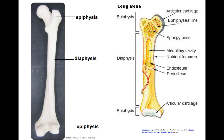Bones are the major organs of the skeletal system. Seen here is a picture of the longest bone in your body, the femur. The ends of a long bone are termed epiphyses, and the shaft of the long bone is termed the diaphysis. Found on the epiphyses where the bone articulates with another bone is articular cartilage, which functions to reduce friction in the joint as the bones move past one another.